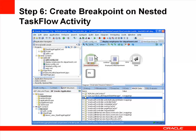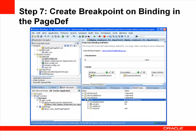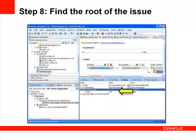You can also set breakpoints for method call activities. In this case, we're looking at the bounded taskflow that is called from the unbounded one and enabling the breakpoint for the method call that executes the view object query by passing in the deptNo parameter. If the value is set correctly when it's passed to the page flow scope for the method call, the next step is to set a breakpoint on the binding in the page def for that method call. Now we can see that the root of the issue is that the deptNo param is null by the time it's passed to the executeWithParams action binding in the nested taskflow.